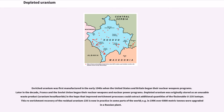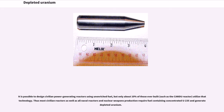Re-enrichment recovery of the residual uranium-235 is now in practice in some parts of the world; for example, in 1996 over 6,000 metric tons were upgraded in a Russian plant. It is possible to design civilian power generating reactors using unenriched fuel, but only about 10% of those ever built, such as the CANDU reactor, utilized that technology. Thus most civilian reactors, as well as all naval reactors and nuclear weapons production, require fuel containing concentrated U-235 and generated depleted uranium.